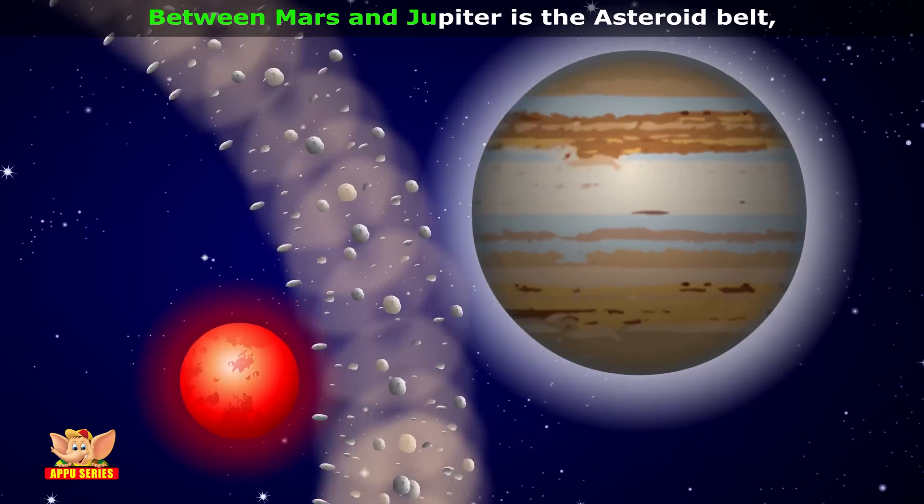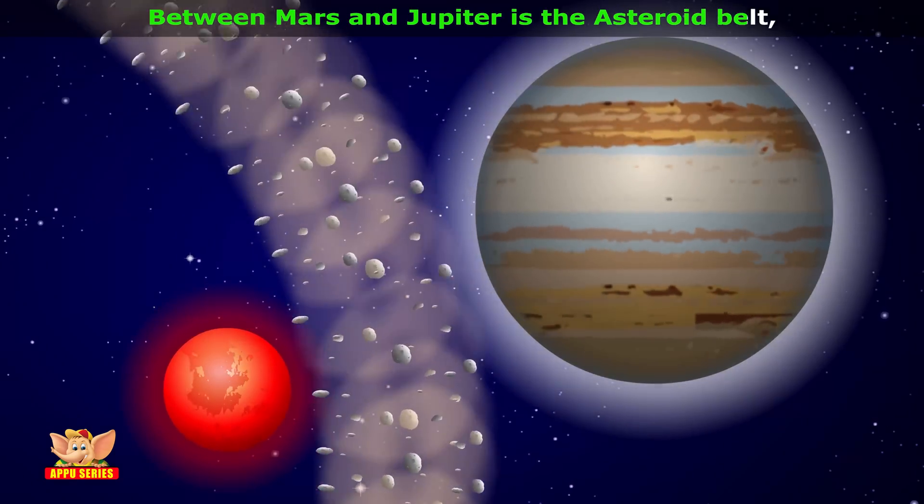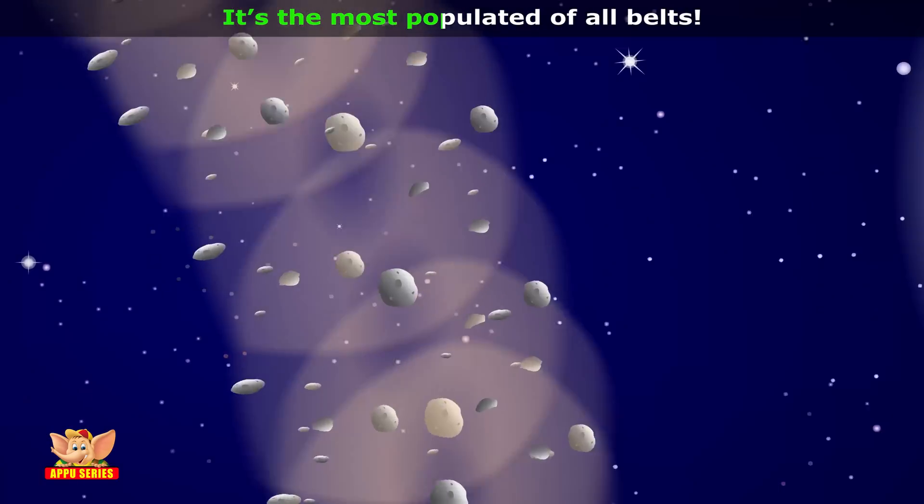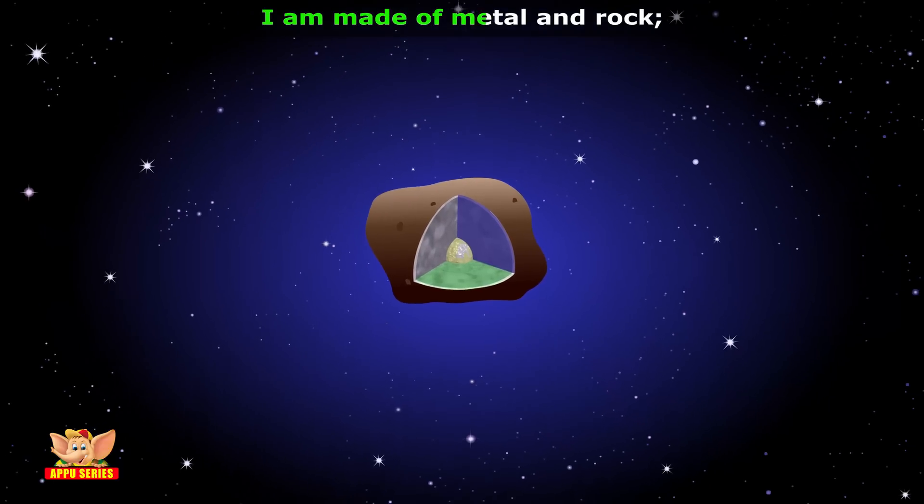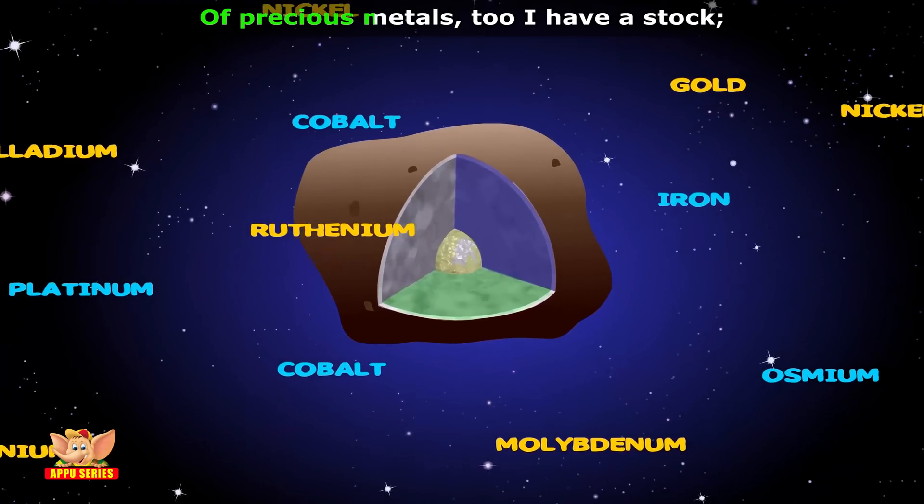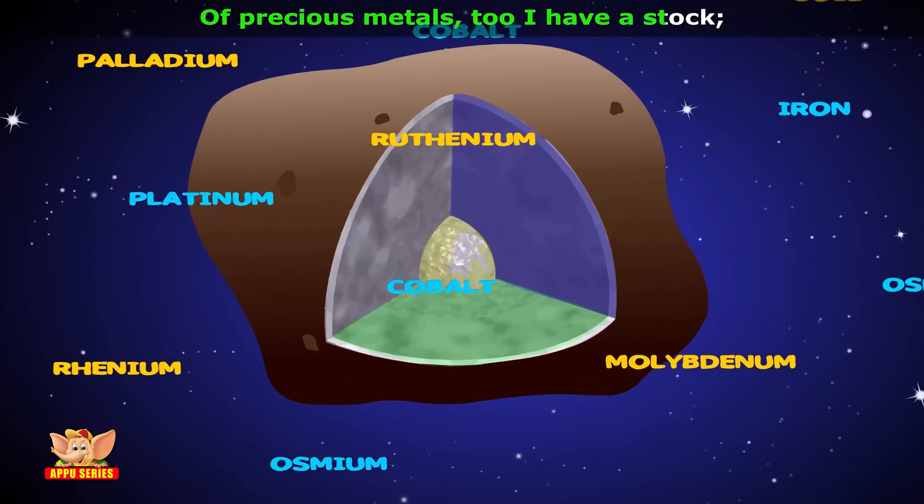Between Mars and Jupiter is the asteroid belt, it's the most populated of all worlds. I am made of metal and rock, of precious metals to harvest up.